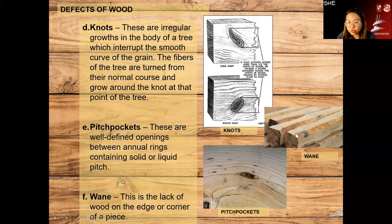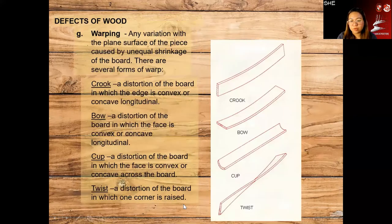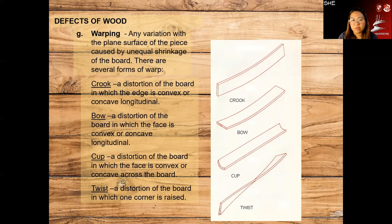We have the wane — that's the corner portion. This is the lack of wood on the edge or corner of a piece. We also have warping, which has different types. Warping is any variation from the plain surface of a piece caused by unequal shrinkage of the board — it bends.